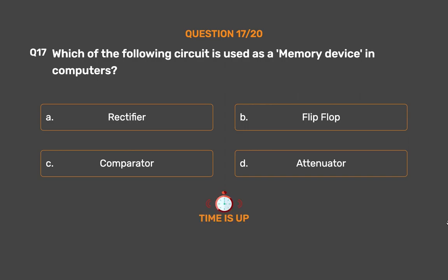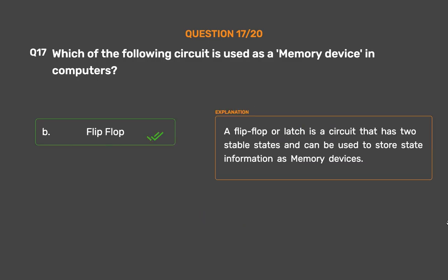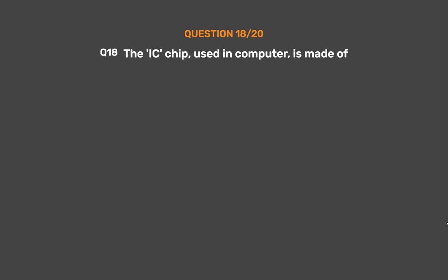The correct answer is Option B: Flip-flop. A flip-flop or latch is a circuit that has two stable states and can be used to store state information as memory devices.